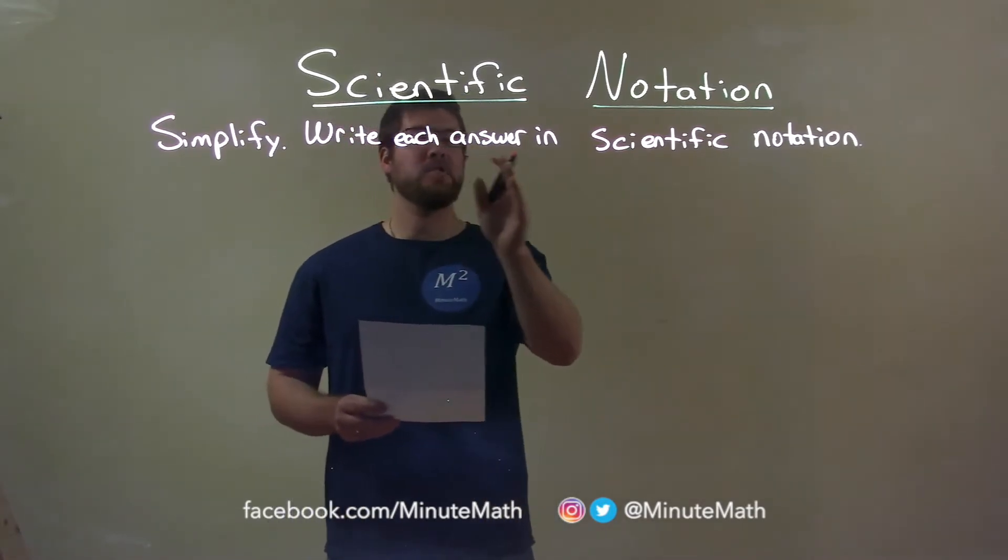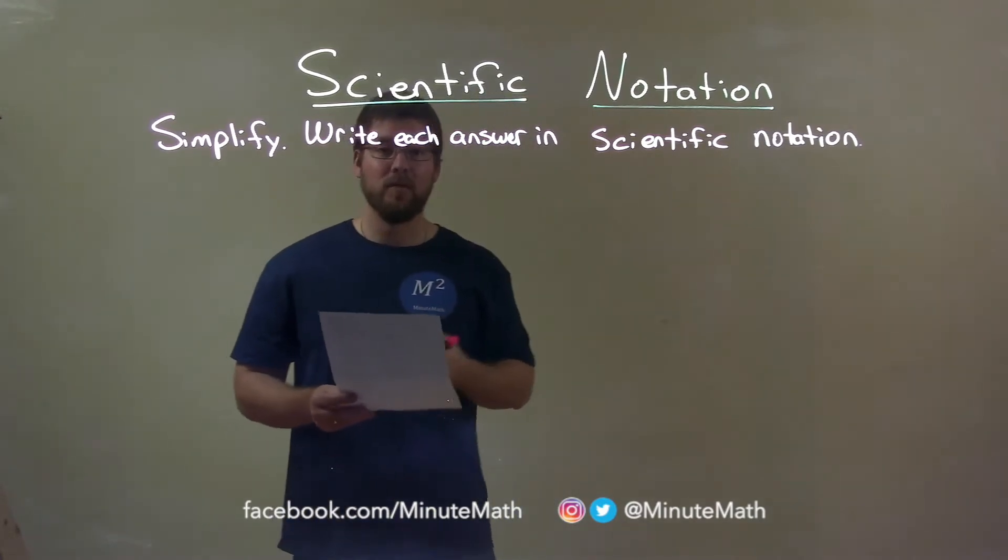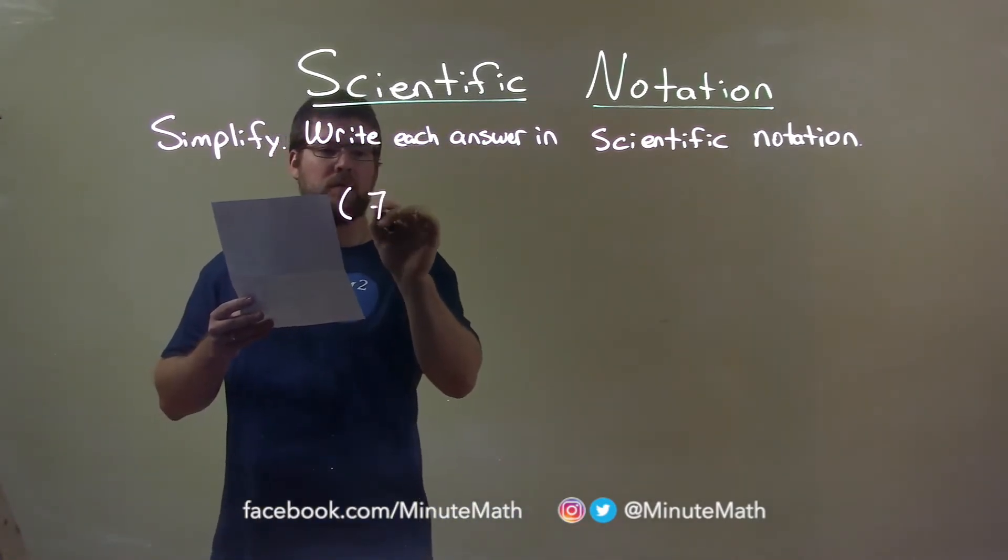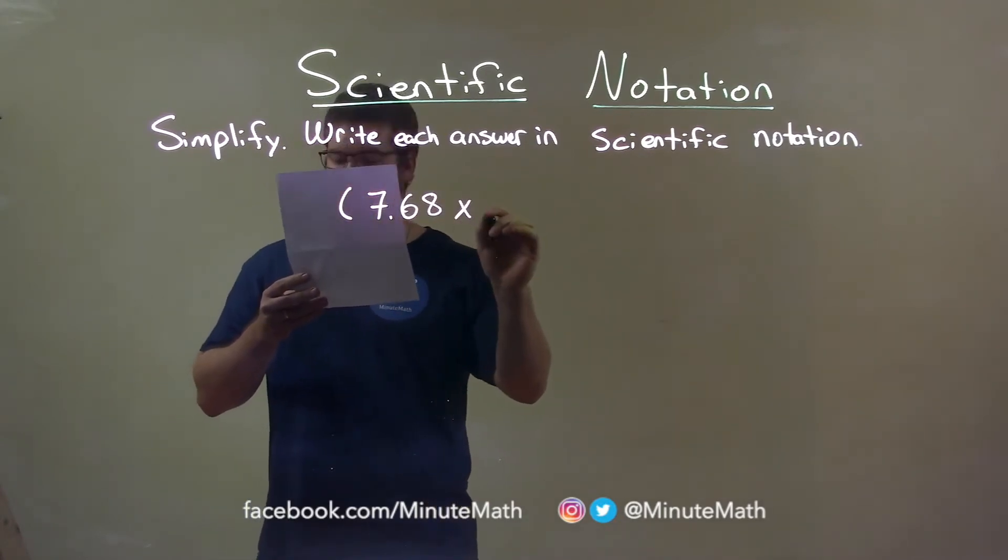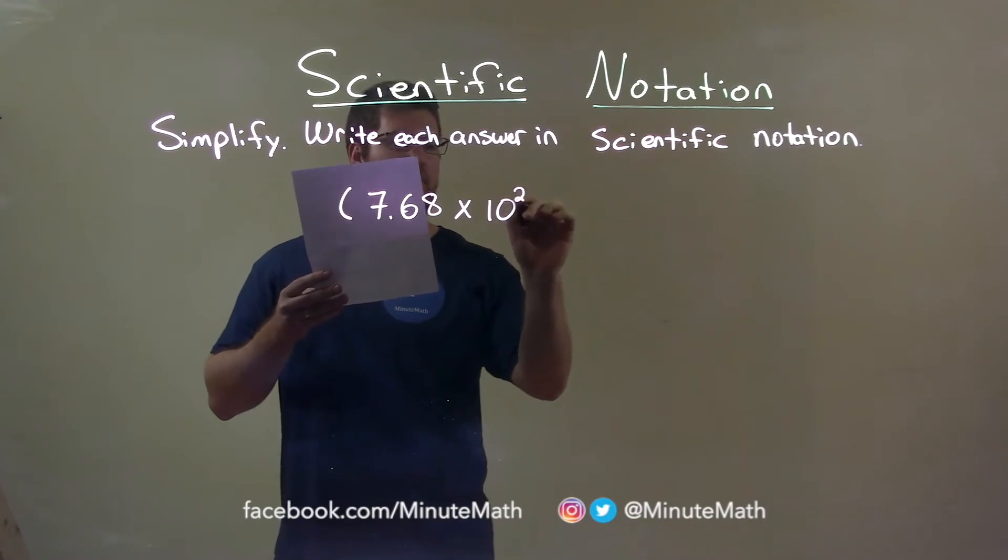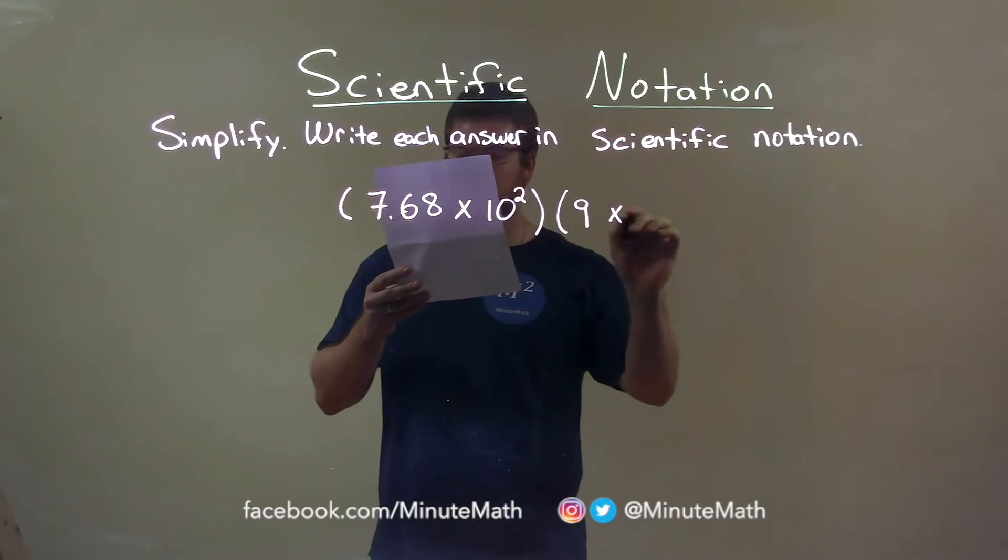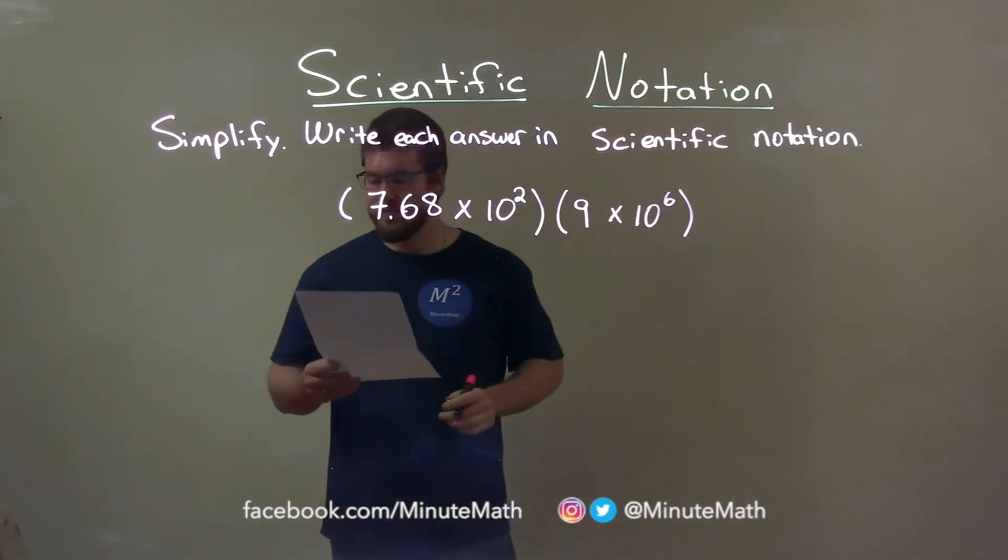We're going to simplify and write each answer in scientific notation. So, if I was given this problem, 7.68 times 10 squared, and we're multiplying that by 9 times 10 to the 6th power.